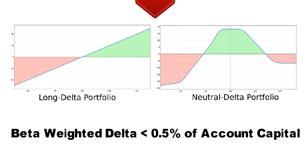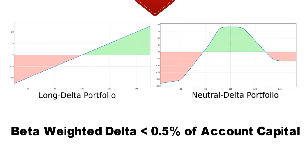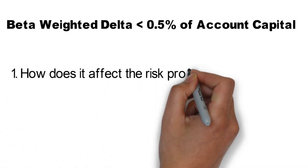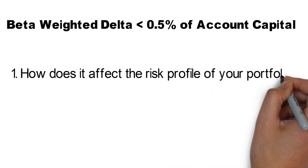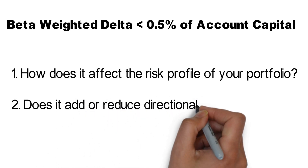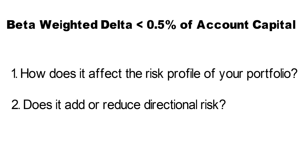Before opening a new position, you should always first evaluate its effect on your overall portfolio and check if the position is a good fit. Here are two questions to consider before opening, closing, or adjusting a position: How does it affect the risk profile of your portfolio? And does it add or reduce directional risk? If you are trying to stay market neutral and your portfolio currently has a beta weighted delta of 200, you should try to add some negative beta weighted delta positions to balance this out — while making sure to keep the profitable range of your portfolio wide enough.